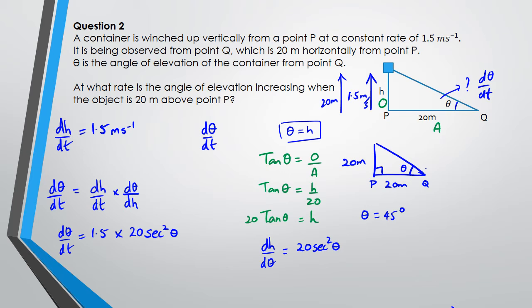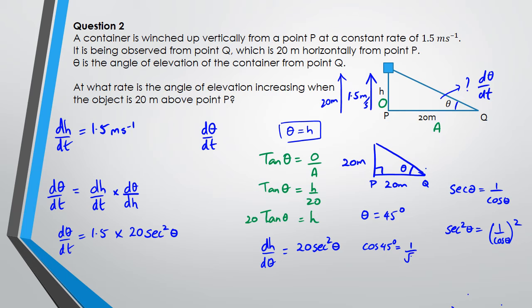We need sec²θ. We know sec θ equals 1/cos θ, so sec²θ equals 1/cos²θ. cos(45°) equals 1/√2, so sec²(45°) equals 1 divided by (1/√2)² which equals 2. Going back to the equation, substituting in 1.5 and 20 sec²θ.